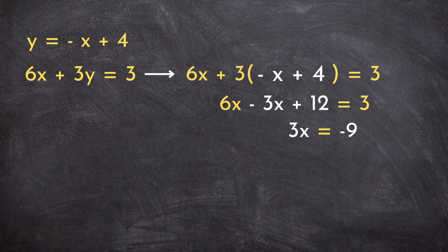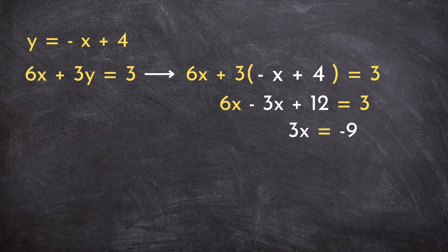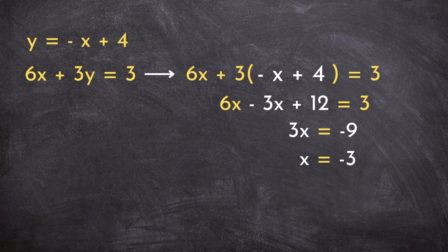Now we can collect our like terms and subtract 12 over to the other side. Dividing both sides of the equation by 3 will allow us to solve for x. Whew! x equals negative 3.